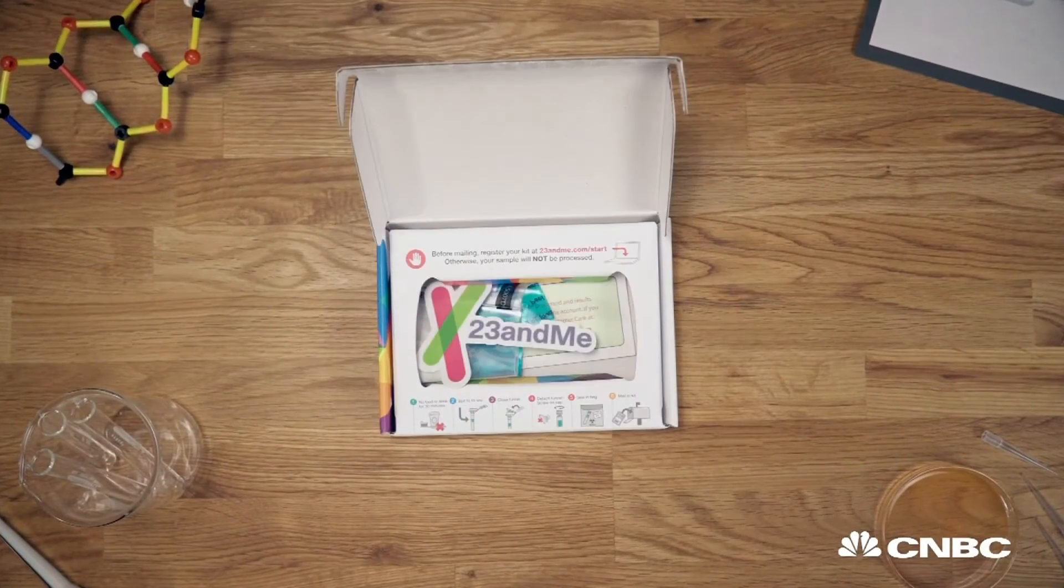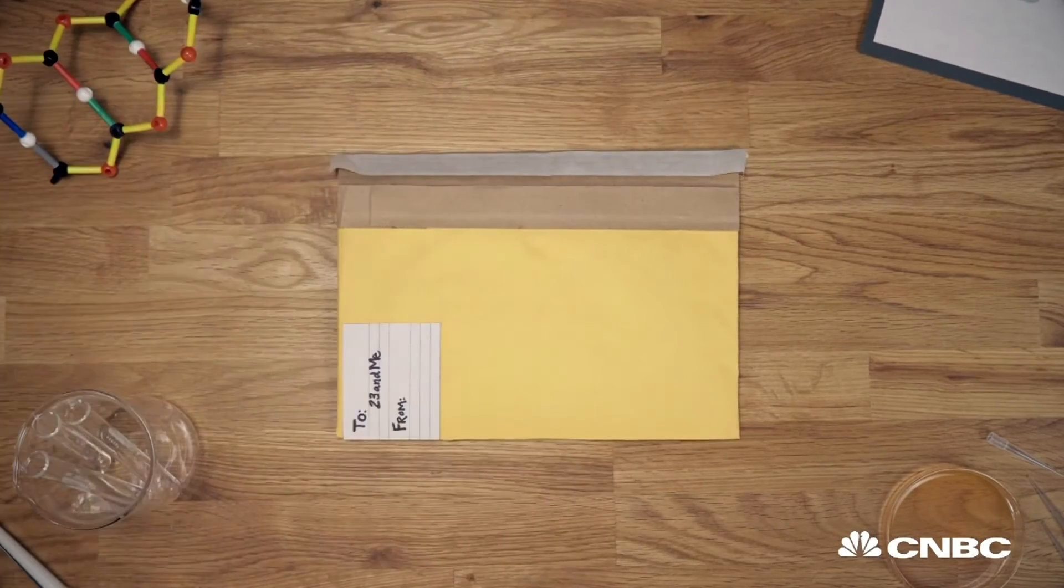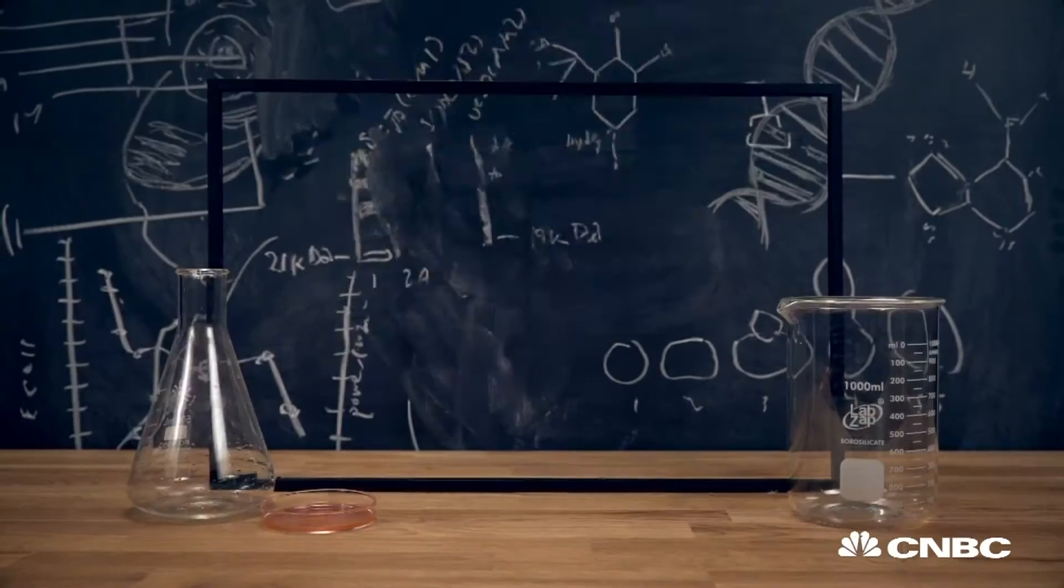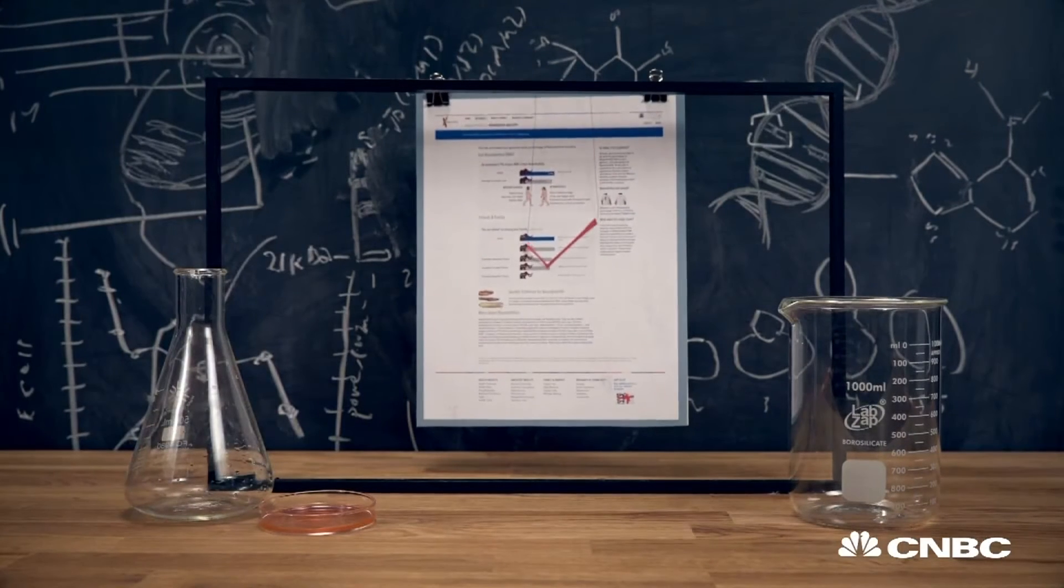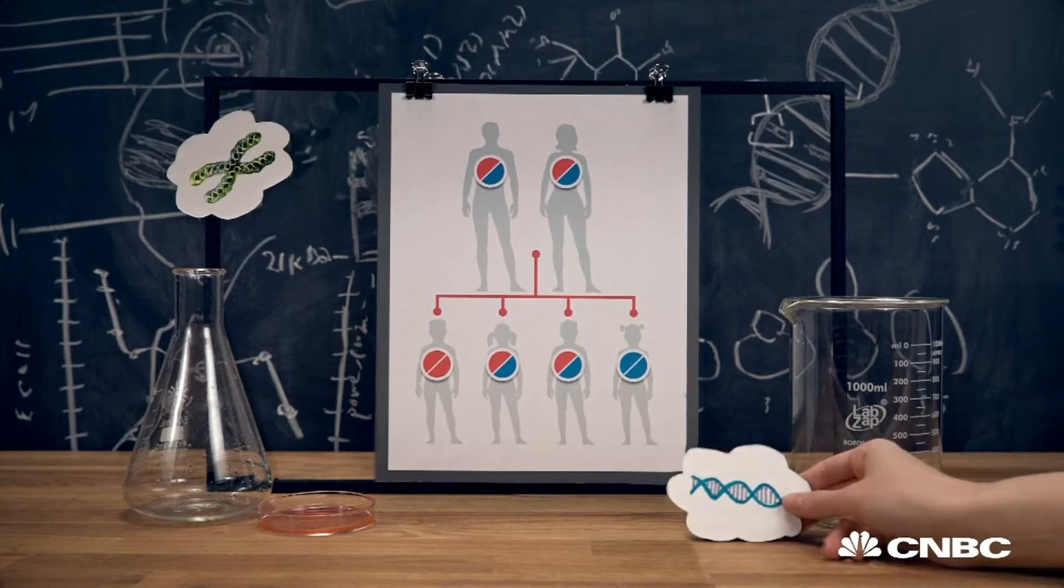23andMe is a personal DNA testing kit. You spit into a tube, mail the package back to the company, and in six to eight weeks, you receive a detailed report on your genetic history. The FDA approved some of the tests' data, which can tell people whether they are carriers of 36 inherited conditions.